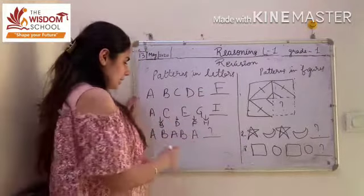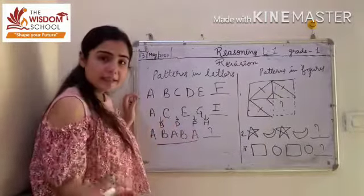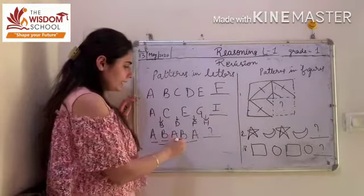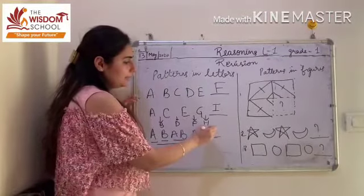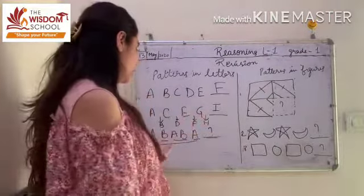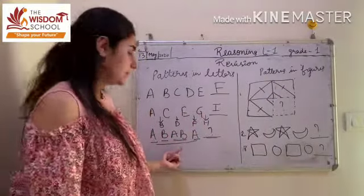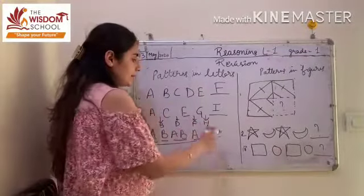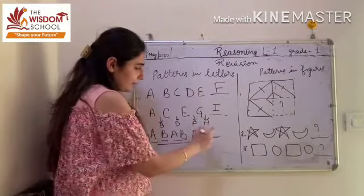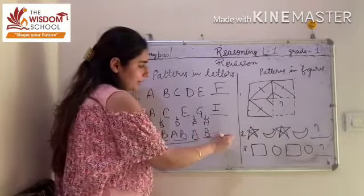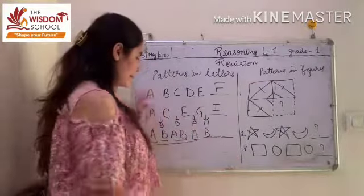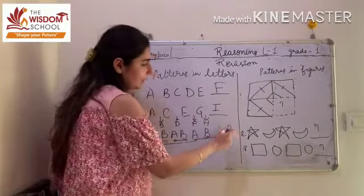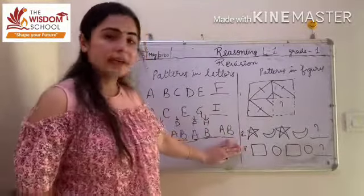The next example is a repeating series. Here we have written A, B, A, B, A, B — then there is a blank. You will find a repeating series. After A, what comes? B. So next in the series: A, B, A, B, A, B — we write A, B in the next blank as well. This is the repeating pattern.